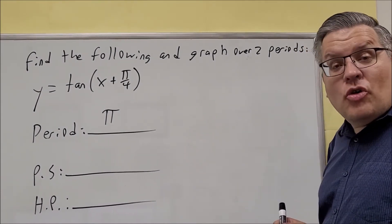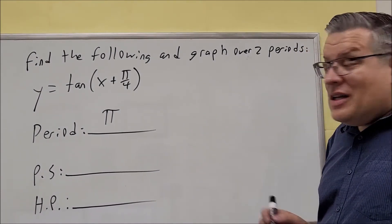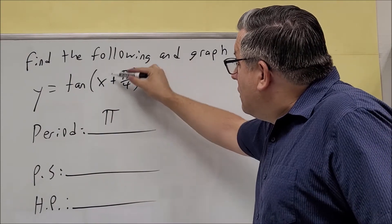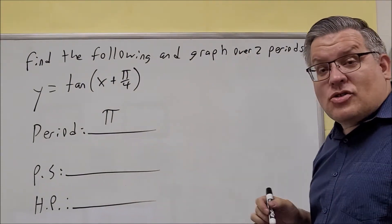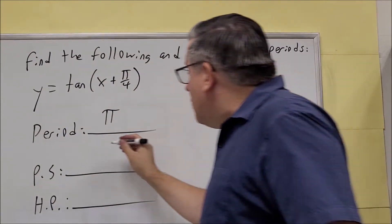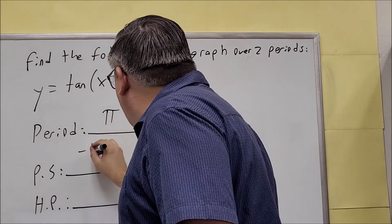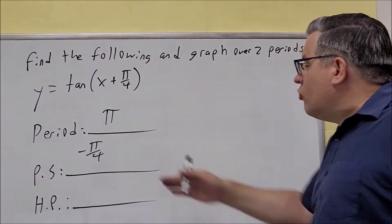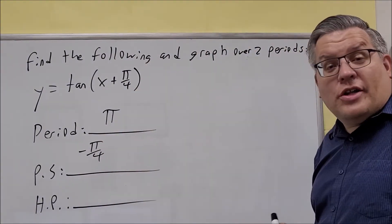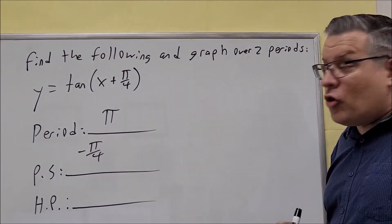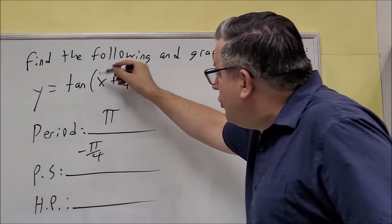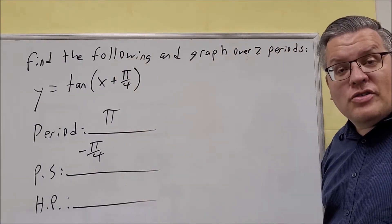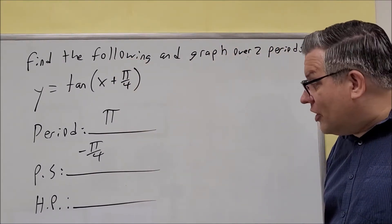The phase shift is going to be the opposite sign of c over b. So it's going to be negative pi over 4 divided by 1, which we can just write as negative pi over 4 — we don't need to show the 1. So negative pi over 4 is the phase shift.